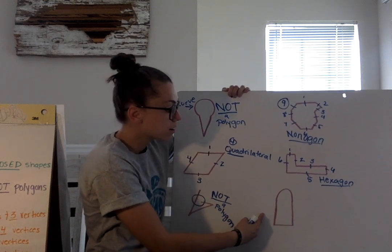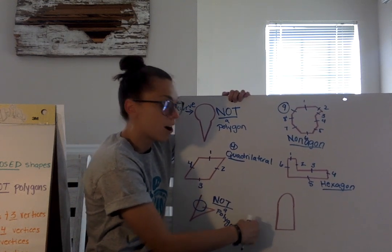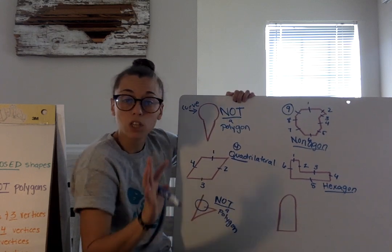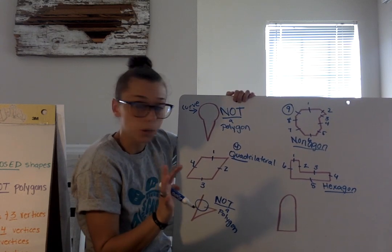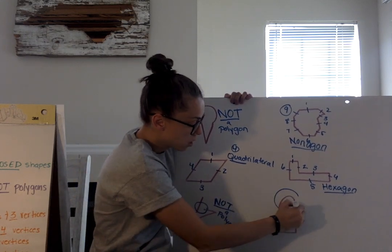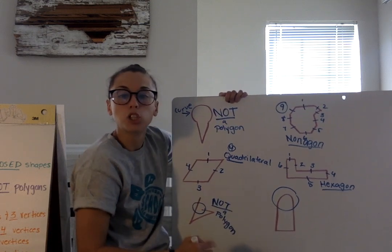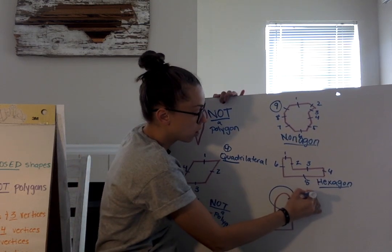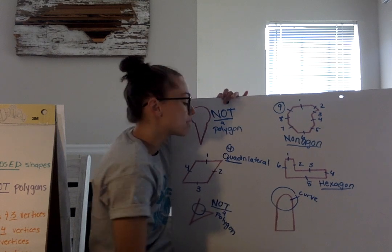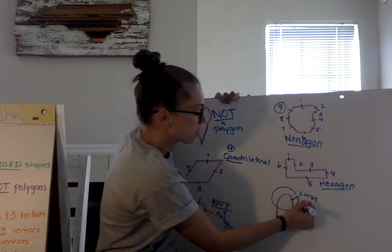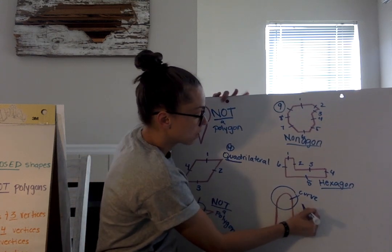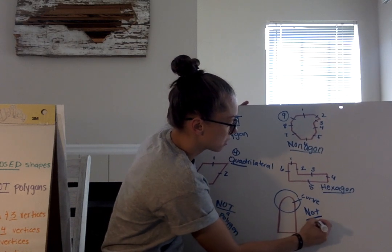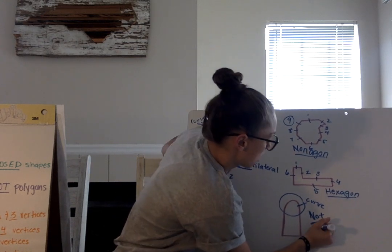Down to our very last shape — is this a polygon? Well, it is a closed shape, I see no opening, so we're good there. But we have this thing that almost looks like a dome on top — that is a curve — and we know that polygons cannot have curves. So I can stop right there: this is not a polygon.